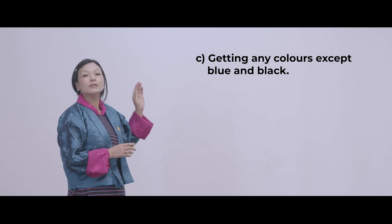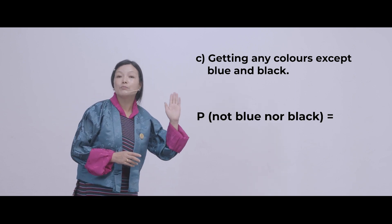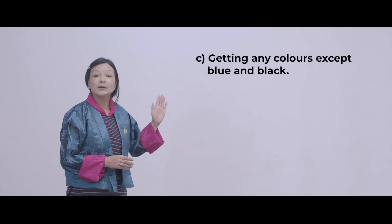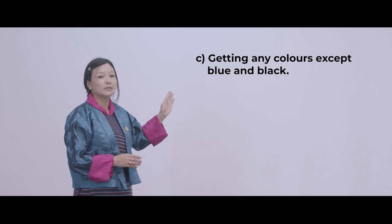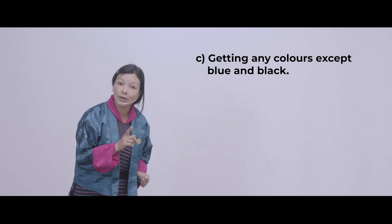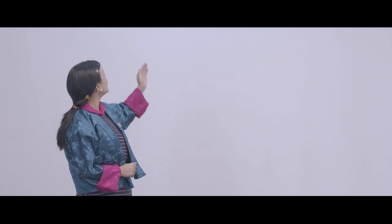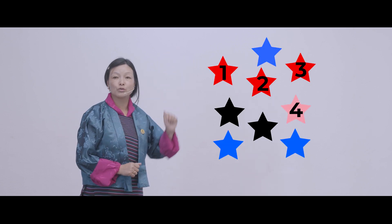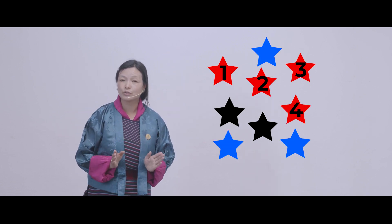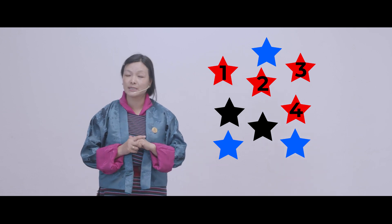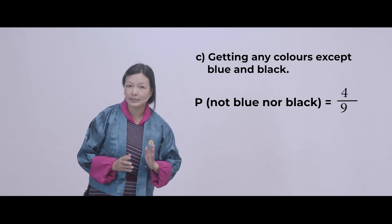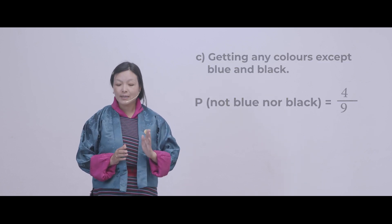The next question: you have to look at all colors except blue and black. Let's count the other colors — you should not count blue and black. Count: 1, 2, 3, 4. There are 4. So the theoretical probability for this one is 4 over 9.